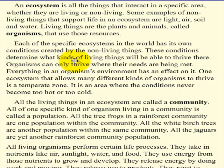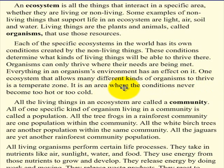These conditions determine what kinds of living things will be able to thrive there. Organisms can only thrive where their needs are being met. Everything in an organism's environment has an effect on it. One ecosystem that allows many different kinds of organisms to thrive is a temperate zone — an area where the conditions never become too hot or too cold. All the living things in an ecosystem are called a community. All of one specific kind of organism living in a community is called a population.